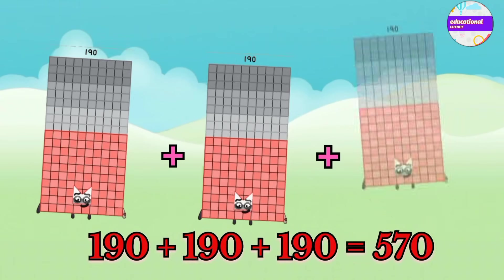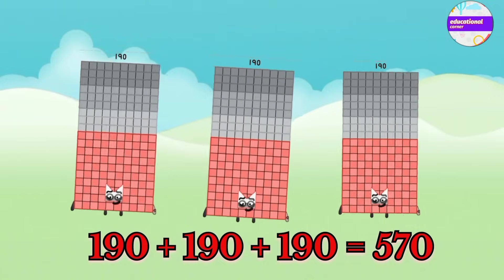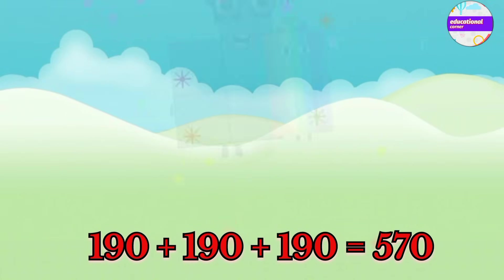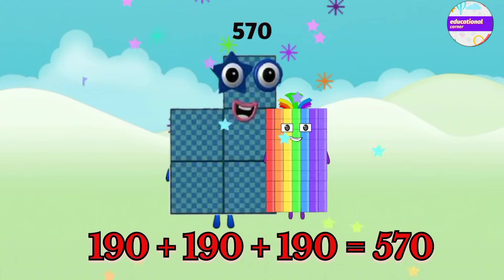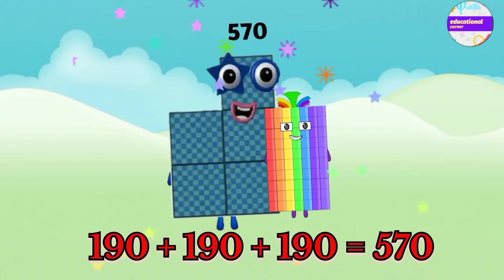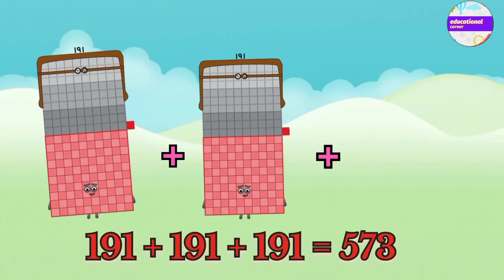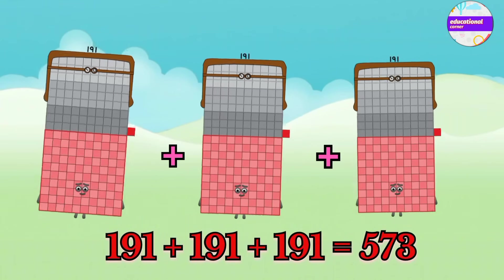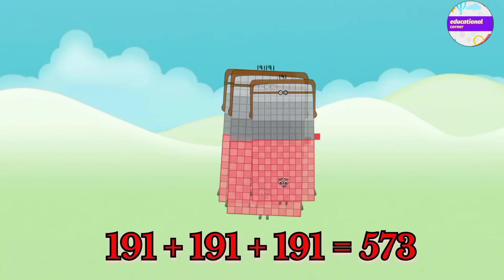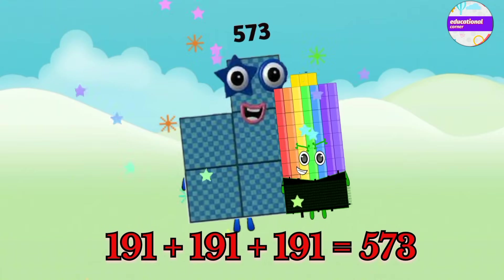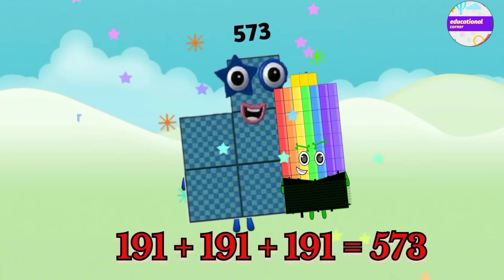190 plus 190 plus 190 equals 570. 191 plus 191 plus 191 equals 573.